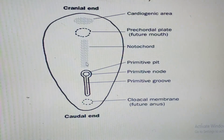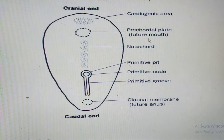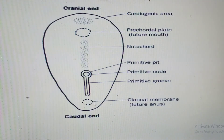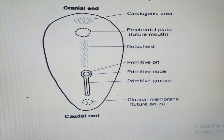The proliferating mesoderm cells from the primitive streak spread everywhere in the embryonic disc except two areas: the prochordal plate — the future buccopharyngeal membrane — and the cloacal membrane — the future anal opening. Mesoderm is absent there because these membranes must eventually rupture to form openings. If mesoderm were present, it would form muscle, connective tissue, bone, and cartilage, making rupture impossible.